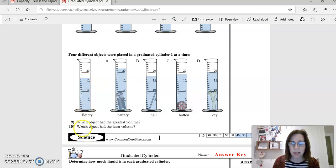So questions 9 and 10 here - which object had the greatest volume and which object had the least volume - refers to these objects. When you drop a battery, for example, into a graduated cylinder, this looks like it's got 17 mils of water in it.